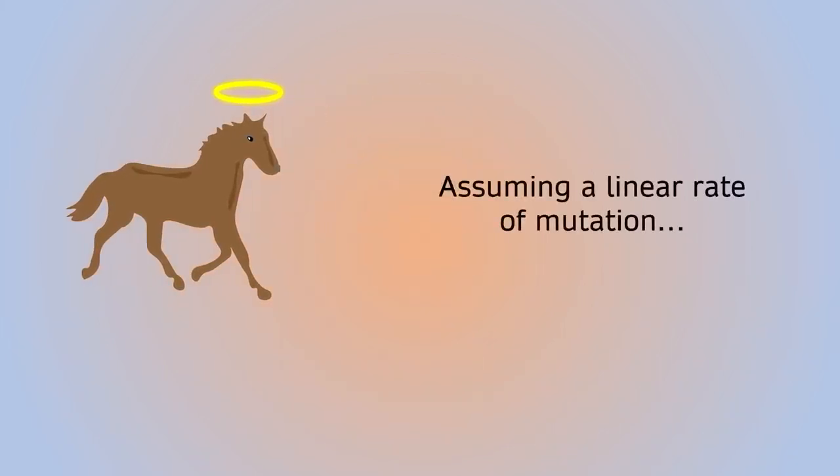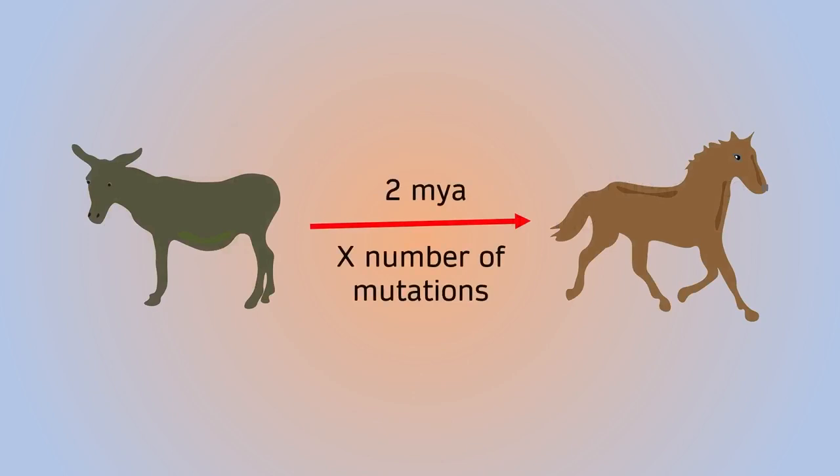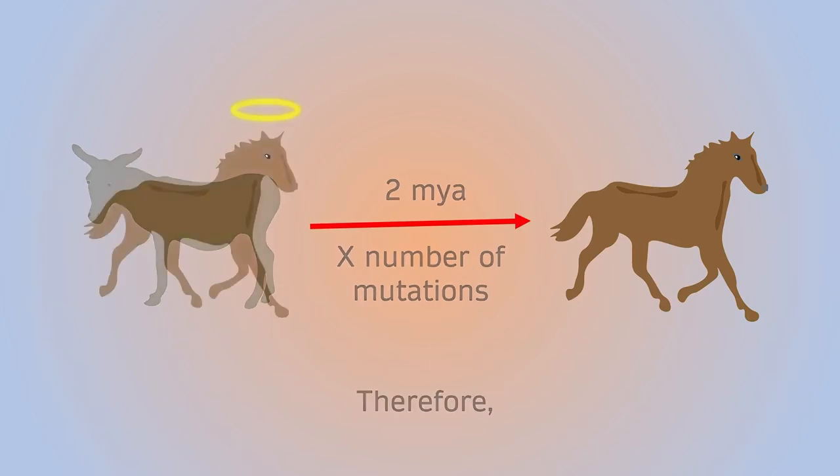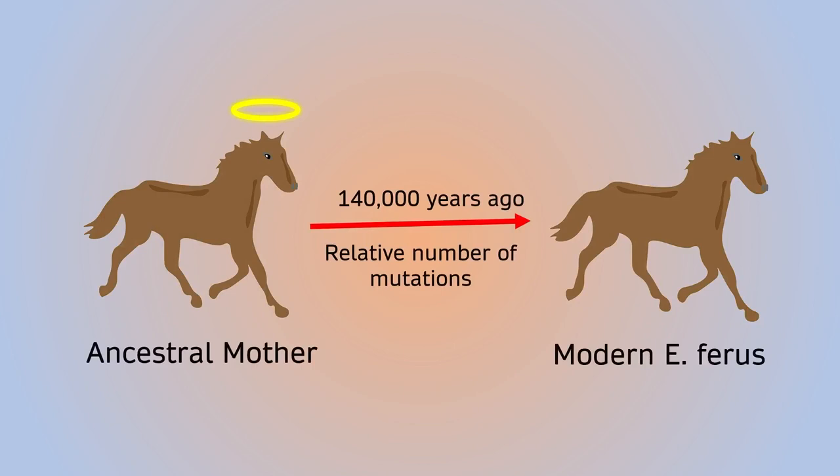In Achille's case, this was a donkey mitochondrial genome, which bifurcated from the horse's genetic lineage approximately 2 million years ago. Using this, we can translate genetic difference into time, and extrapolating on this data, Achille was able to determine that the most recent common ancestor of horse lineages was 140,000 years ago.